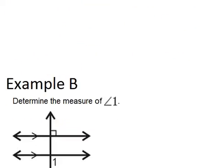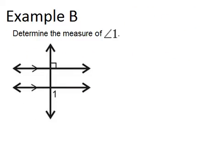Looking at example B, this one says determine the measure of angle 1. Now what I see is two parallel lines, and it's been notated that this top parallel line is perpendicular to the transversal by that right angle.